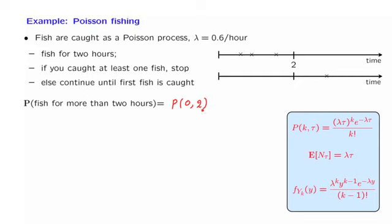In this question, we could have a different approach. You will fish for more than two hours if and only if there are no arrivals during the first two hours, which means that the first arrival in the Poisson process of fishing happened after time two.